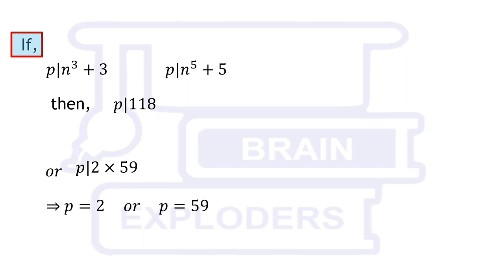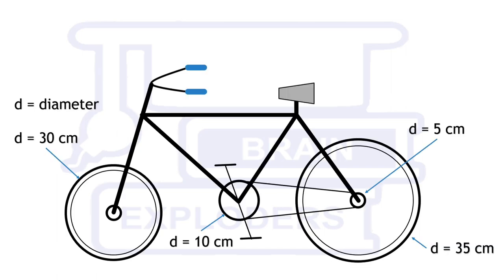It is also possible that only 2 divides or only 59 divides both of these for some value of n. In this particular format, if a is in place of 3 and b is in place of 5, then p divides fifth power of a minus b cubed. Let's move to another question.